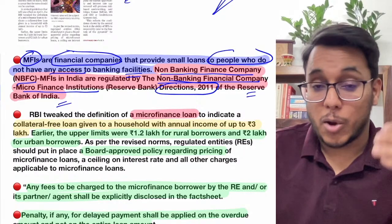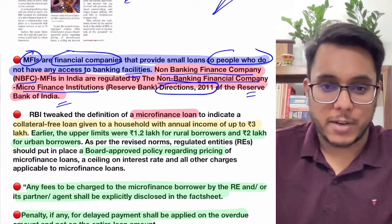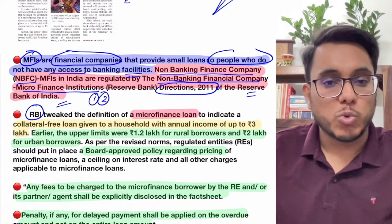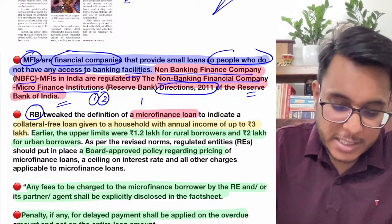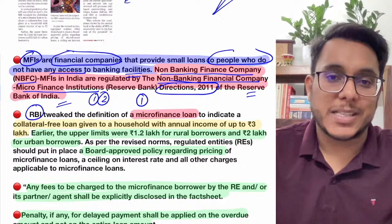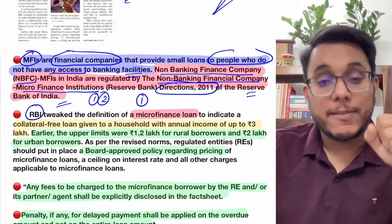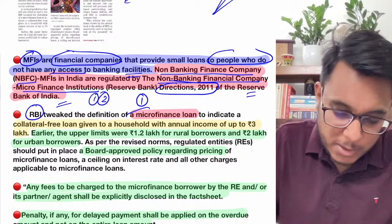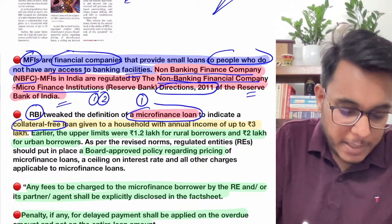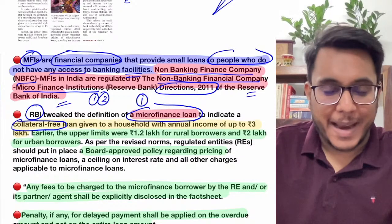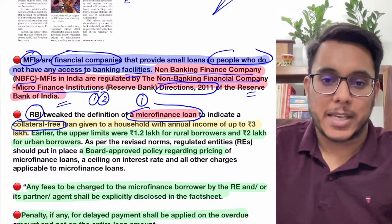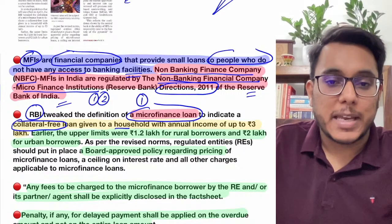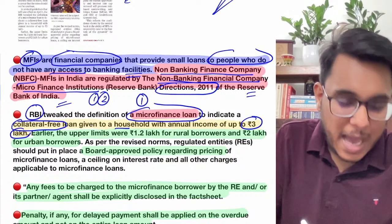Earlier the RBI was a supervisory body regulating what interest rate could be charged. Now the RBI has come out with two changes. Change number one: they changed the definition of a microfinance loan. A microfinance loan is now defined as a collateral-free loan — no gold or property kept as security — given to a household having an annual income of up to three lakh rupees.